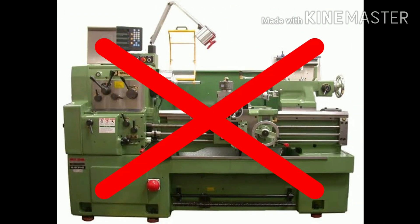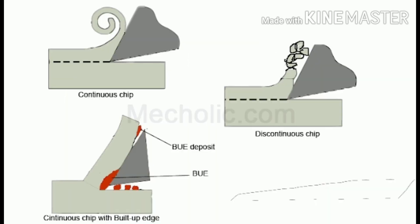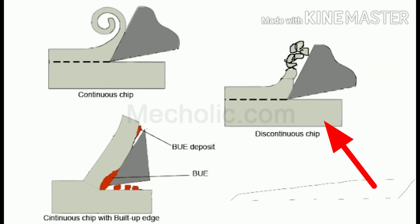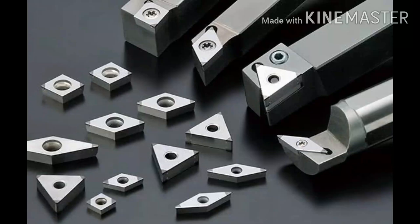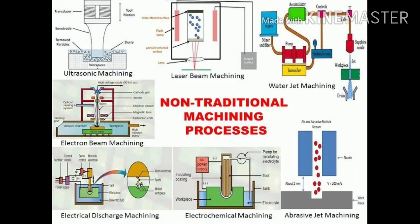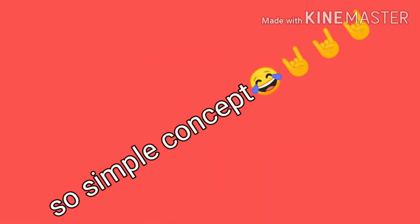For machining these jobs, traditional machining fails. In traditional machining processes, it is always required that there is direct contact between the workpiece and the tool, and chips are detached from the workpiece by shearing action. For this, the tool material must be stronger than the job material. Hence, we cannot use traditional machining processes for hard materials like titanium and its alloys, tungsten and its alloys, iron alloys, carbides, and their alloys. For machining such hard materials, non-traditional machining is a must, because in non-traditional machining there is no direct contact between the workpiece and the tool.